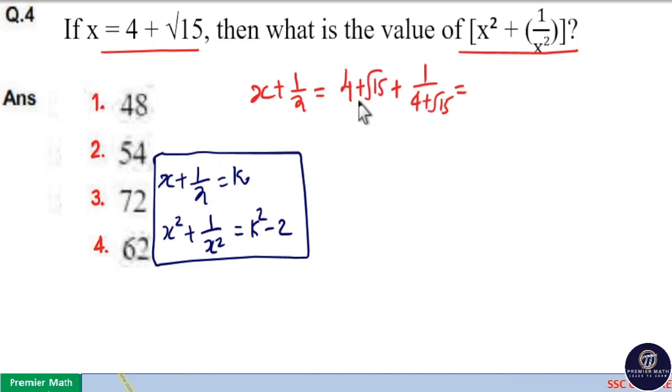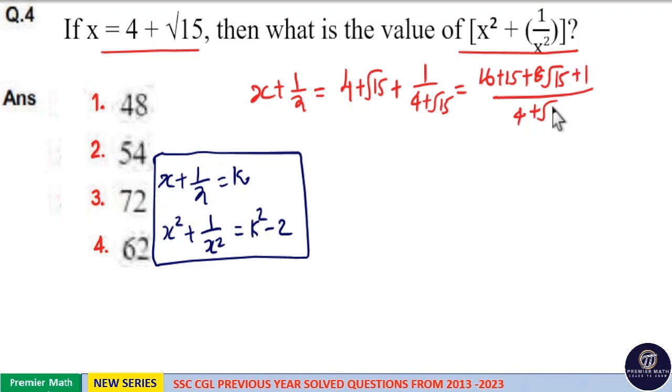Which is equal to 4 plus root 15 the whole square plus 1, which is equal to 4 square is 16, root 15 square is 15, 2 into 4 into root 15 is 8 root 15 plus 1 divided by 4 plus root 15. Now you can see here 16 plus 15 is 31, 31 plus 1 is 32.